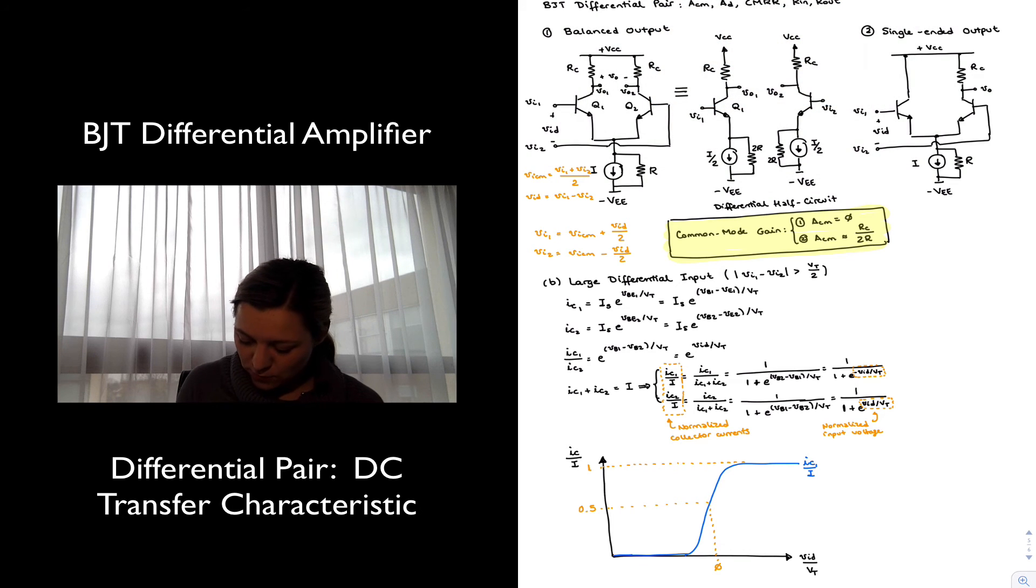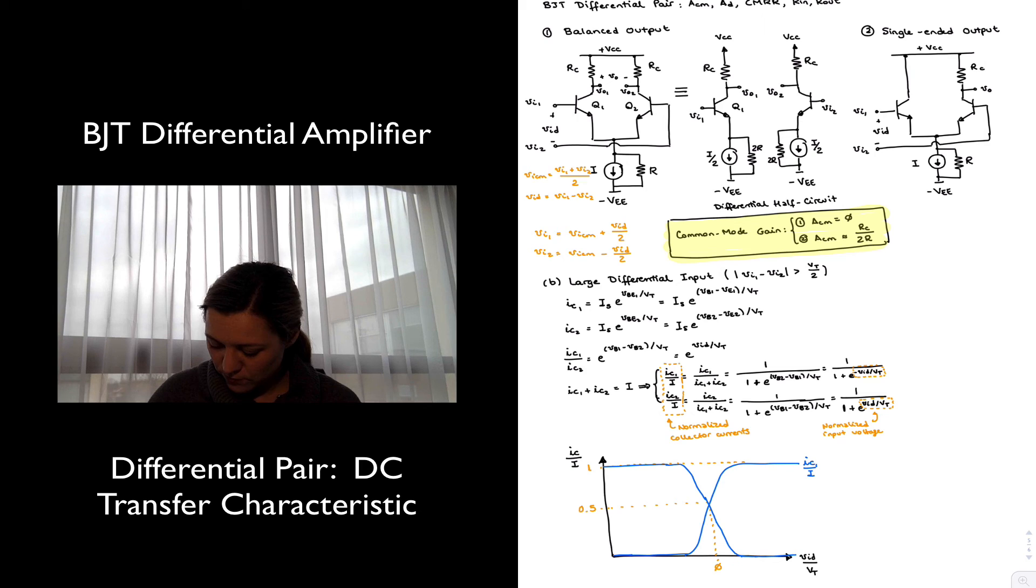And similarly for Q2, when the current is zero on the Q1 branch, the current has a maximum value on the Q2 branch, and there is a region where the input signal is small enough, and the current gets distributed among the two branches. So that will be the curve for IC2 over I. All right.